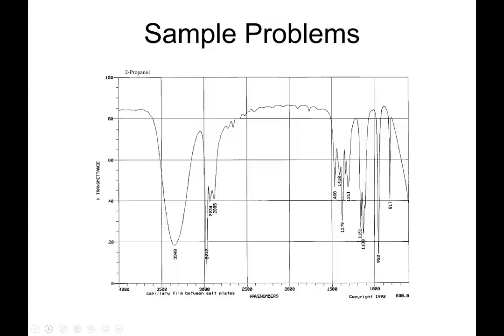Tell me about this molecule. It's got a broad peak—so there's an OH in this molecule. Any double bonds? No double bonds, because there's no peaks above 3,000. So there are no C=C double bonds. There are peaks below 3,000, so there are alkane peaks. But remember: just because there are alkane peaks doesn't mean much, because everything is expected to have alkane peaks. We don't have any alkenes, we do have alkanes.